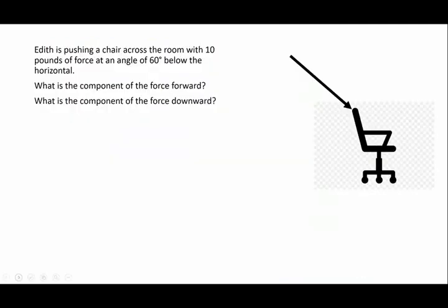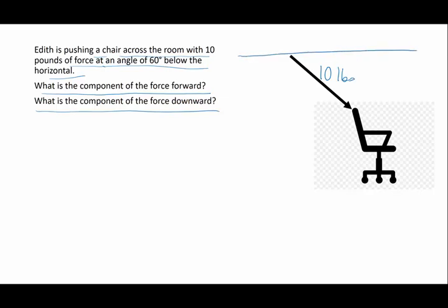So we are going to spend some time breaking vectors into parts. So here's an example. Edith is pushing a chair across the room with 10 pounds of force at an angle of 60 degrees below the horizontal. I want to know what's the component forward and what's the component downward. So here is my vector. Here she's pushing with 10 pounds of force at an angle that is 60 degrees below horizontal. So there's 60 degrees.